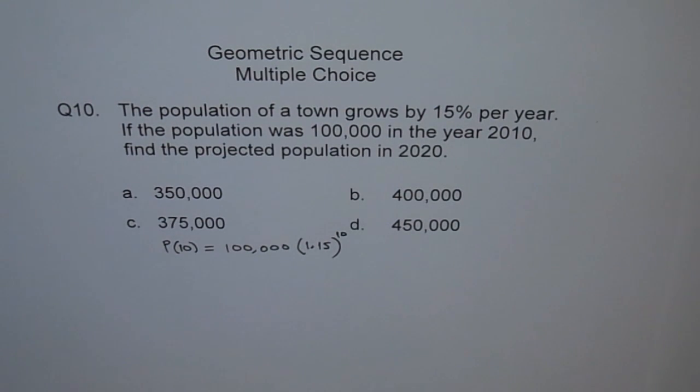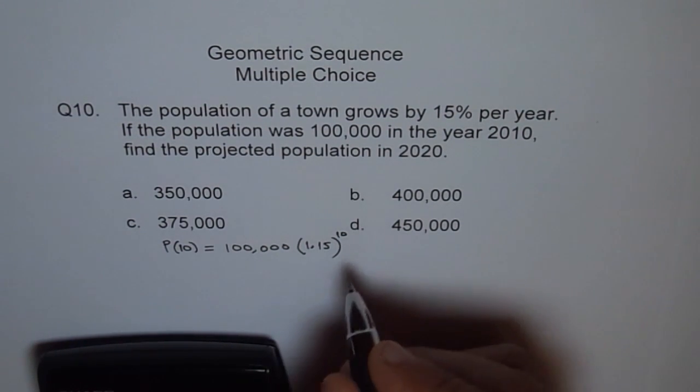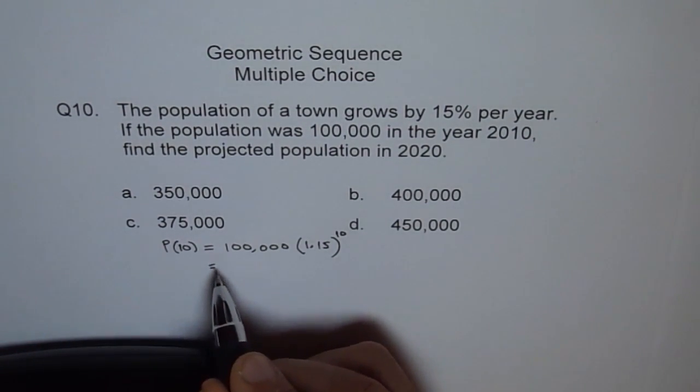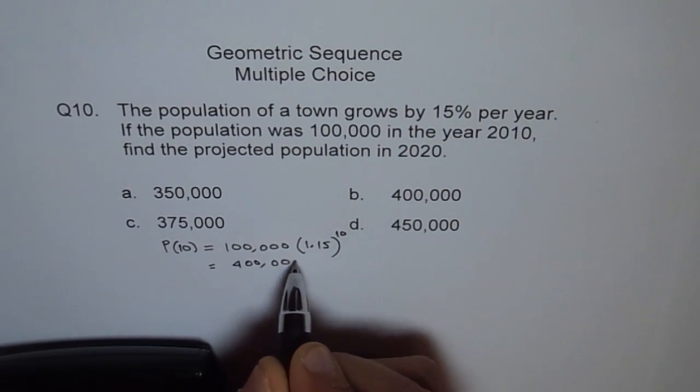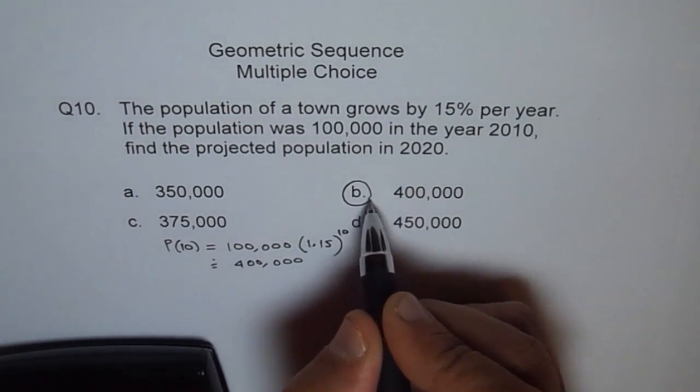So let's calculate this value. 100,000. We can write answer in 100,000. We say 1.15 to the power of 10 equals to 404. So we can say this is equals to 404. So let me write 400,000 approximately. So that is option B.